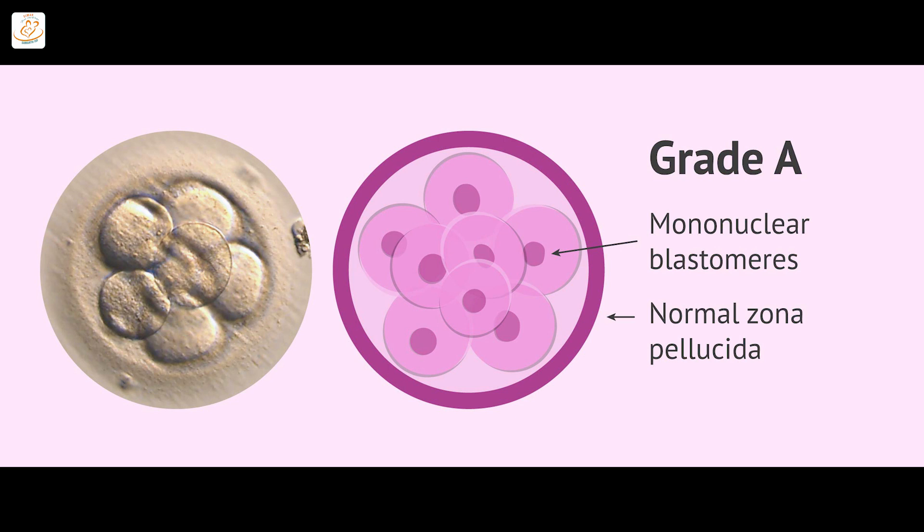Grade 1 embryos have even-sized cells with no fragmentation. Fragmentation refers to small pieces released from the cytoplasm body of the cells — pieces that will never be able to grow further — and these are released out from the embryo. So grade 1 embryos have cells that are even in size and have no fragmentation.